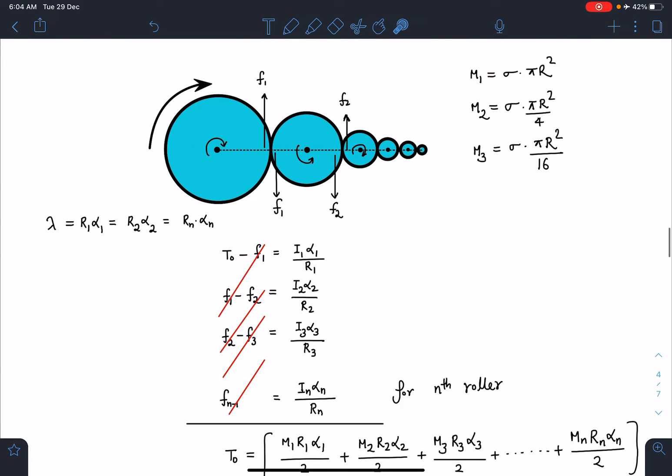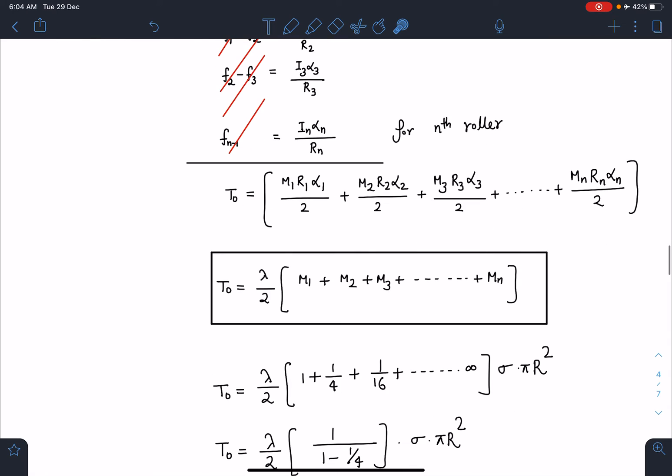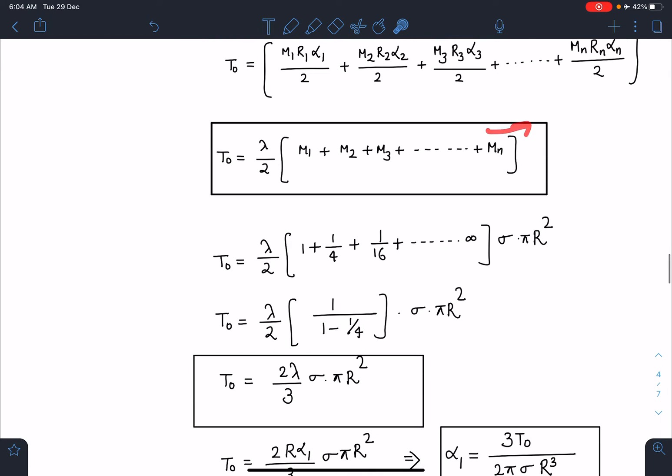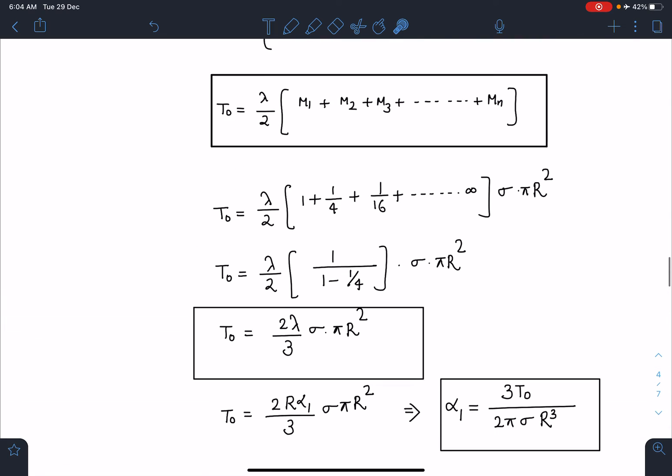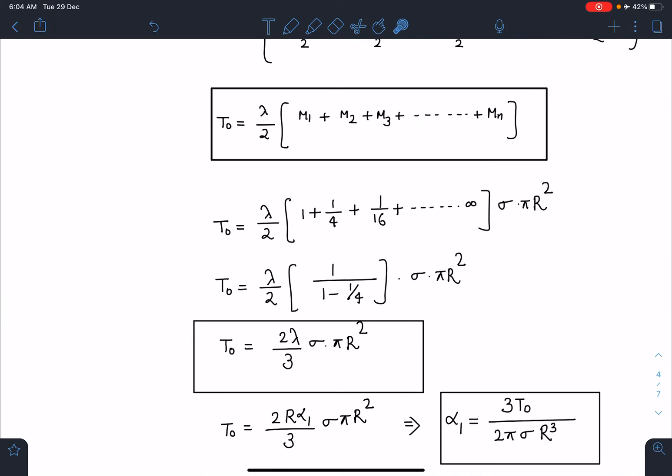I am writing r₁α, r₂α, rₙα as some constant λ. So T₀ = (λ/2)(m₁ + m₂ + ... + mₙ). Taking n tending to infinity, we get T₀ = (λ/2)(1 + 1/4 + 1/16 + ...), which is an infinite GP. By substituting the m₁, m₂ values, we get T₀ = (2λ/3)σπR². Now substituting λ = Rα₁, I get α₁ = 3T₀/(2πσR³).